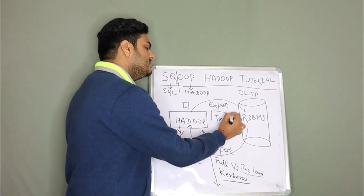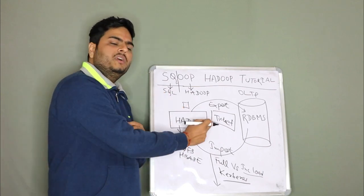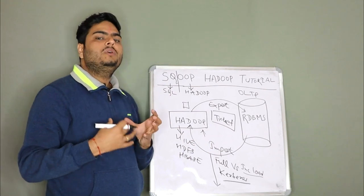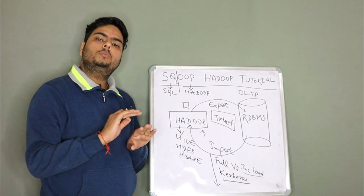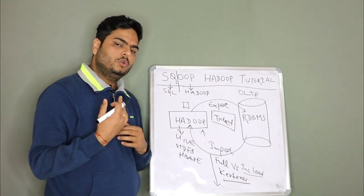Then this Kerberos works on the ticket concept. So there will be one ticket associated with the user who has fired the query. This ticket will be validated in this system and then secure transmission of the data will happen. So this is just a layer of security on top of your Sqoop query. That is another feature of Sqoop which you should know.